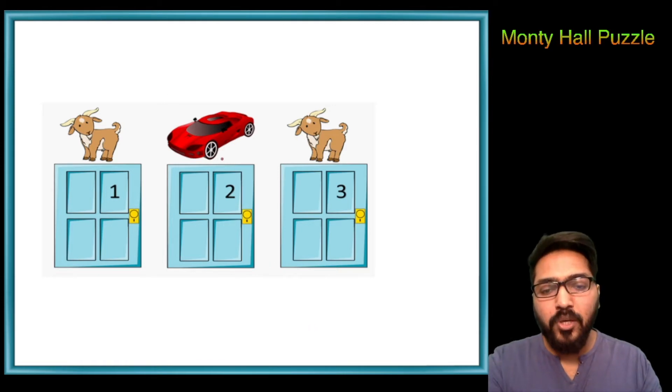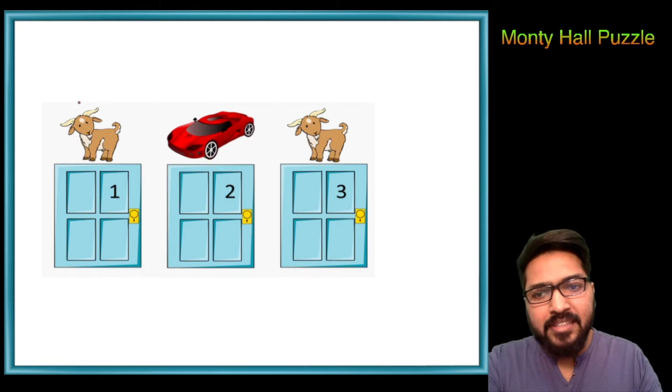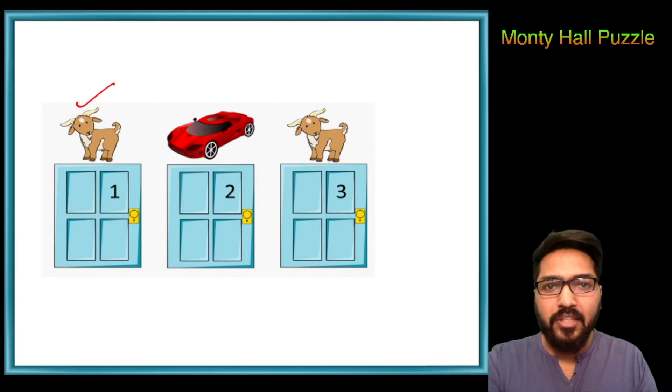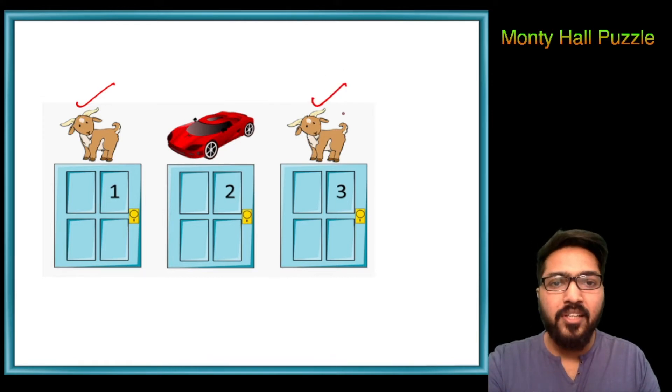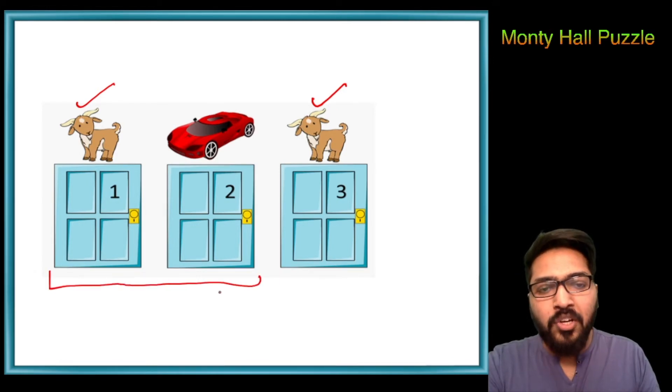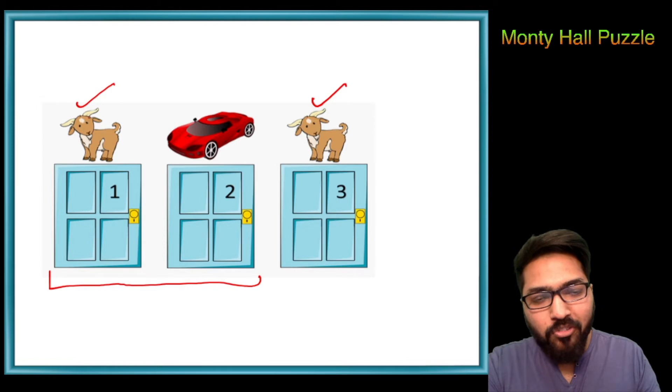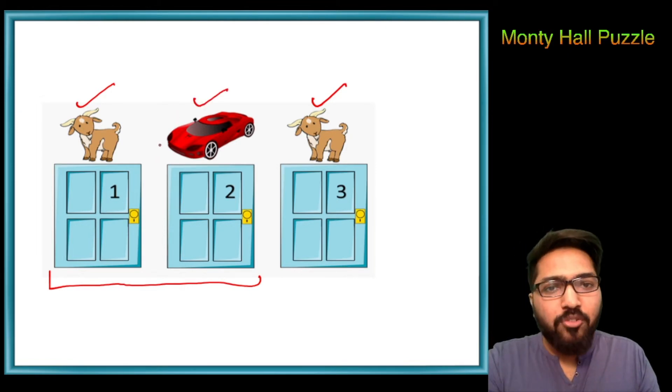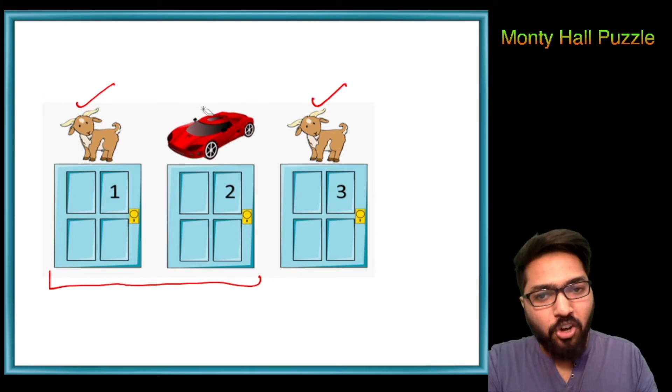Let's take an example. Let's say that our contestant has chosen door one. Now what the host of the show is going to do is that he will open gate three and show that there is a goat. The contestant will be given a choice between door one and two, whether he wants to go with door one itself or change his choice to door two. We have to find whether he should actually change it or not.